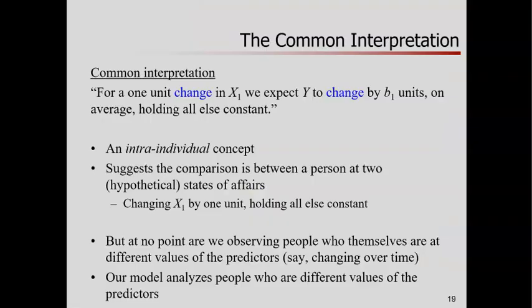In the interpretation I'm going to push towards, what we recognize is we're never really observing people who themselves are at different values. We don't actually have this person and then somehow change their x value. Let's recognize that. Indeed, what our model capitalizes on and uses is a comparison about different people who are at different values of the x variables.